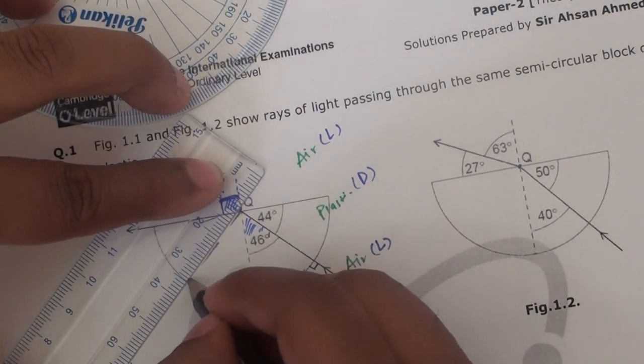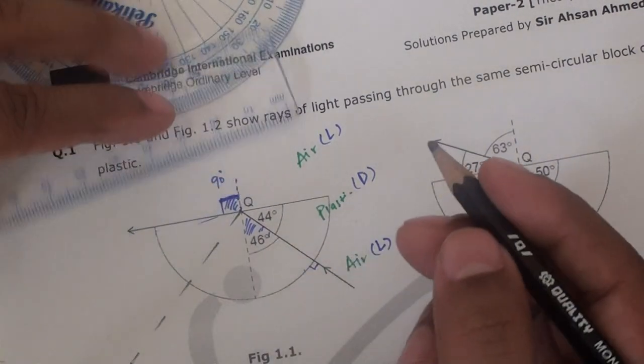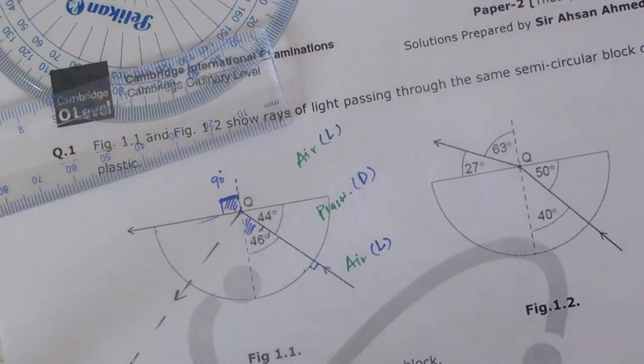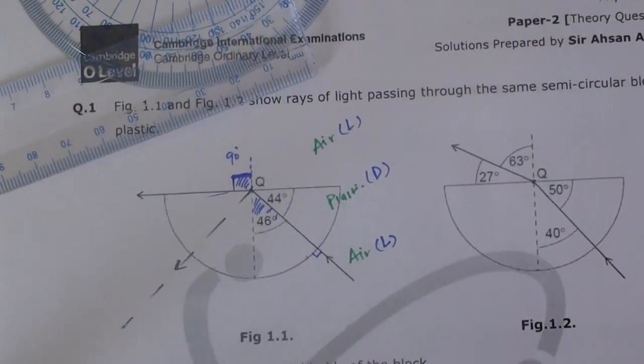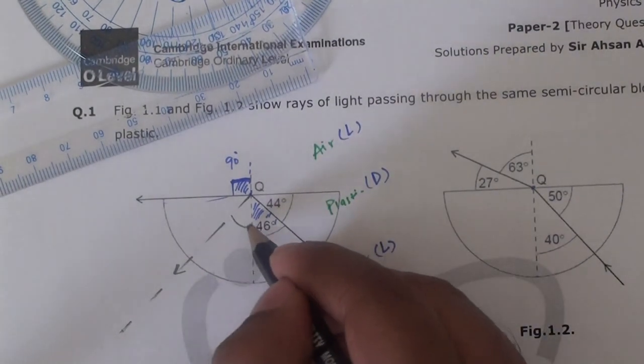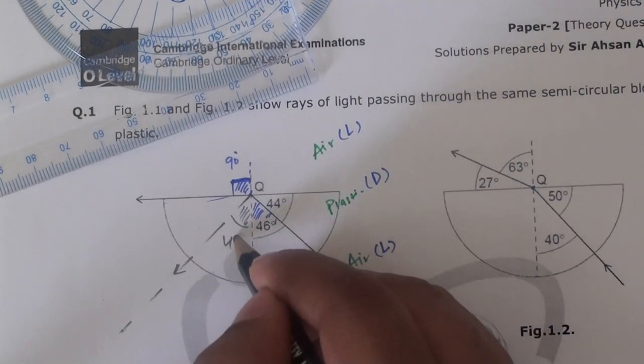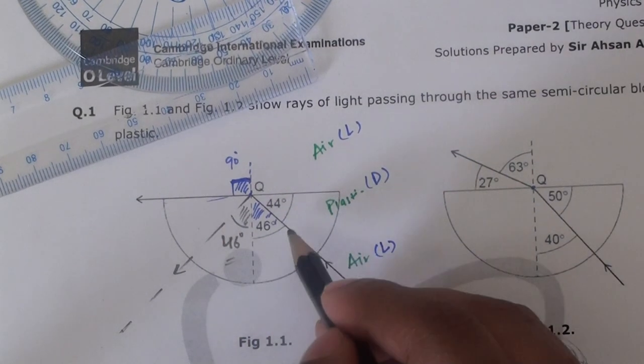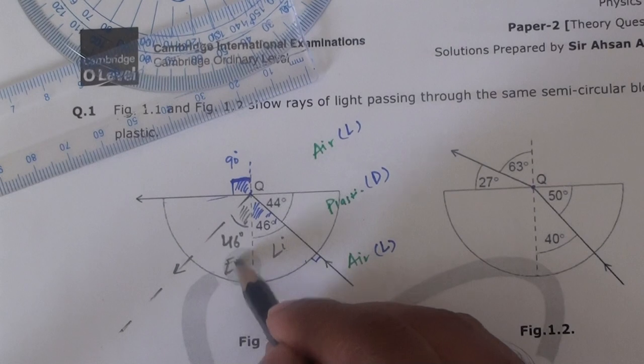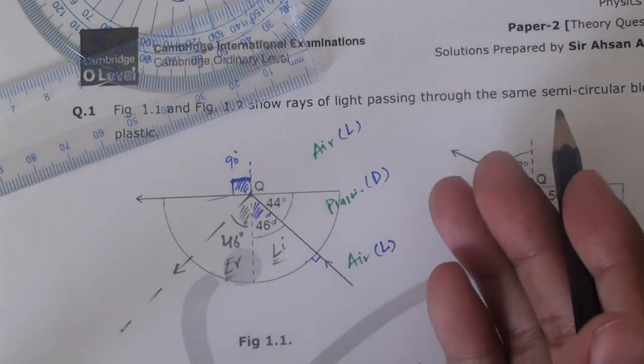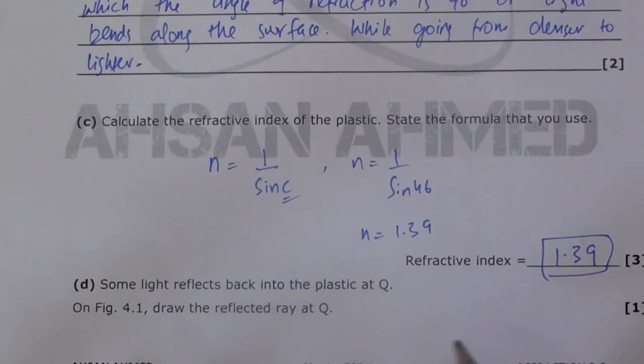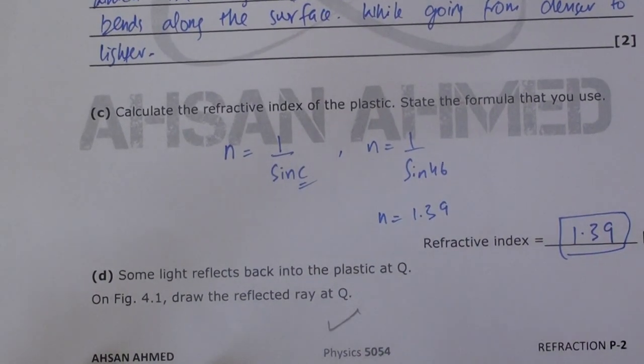Now all I need to do is take the ruler and join this with point Q, and I'm going to draw this with partial lines because this is partial reflection happening at this point. And this angle is also 46 degrees. Remember, for reflection we learned that the angle of incidence and angle of reflection should be equal, as the law of reflection. So finally this part is done as well.